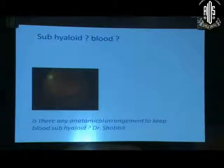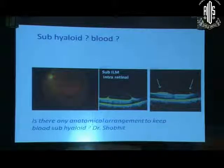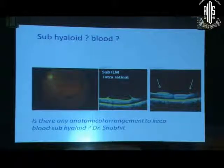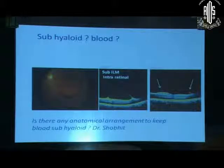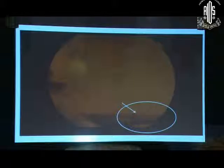Despite curses from Professor Tiwari, I started operating on these cases and found that this was sub-ILM blood. This is the pre-operative OCT and these are tags of the ILM after I removed it. Is there any anatomical arrangement between retina and vitreous to keep blood sub-hyaloid in such a well-defined form? No, sir. Only thing which I learned from surgical experience is that it is not possible to remove this blood without removing the ILM, so I assume it is always sub-ILM.